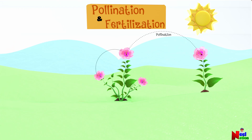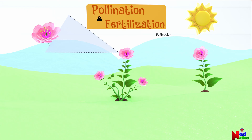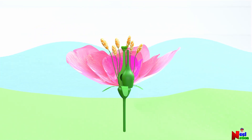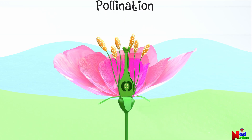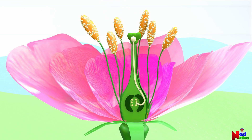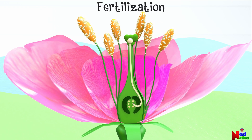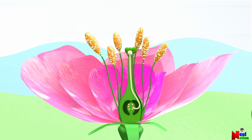Pollination is followed by fertilization. Fertilization is like a plant having a special hug to make baby seeds. After the plant's flowers have been visited by bees or butterflies, the pollen lands on the female part of the plant. After the pollen lands on the stigma, it travels down a tube. Then a part of the pollen meets an egg, or ovule, in the ovary — they join together, and this moment is called fertilization. It is like a magical union.